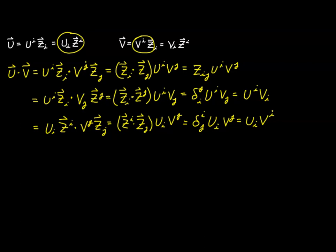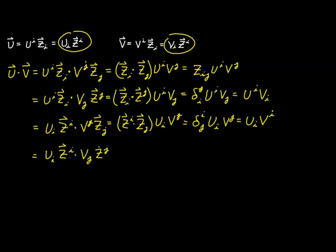We have one more possibility: using the contravariant basis for both vectors. That's u_i z^i dotted with v_j z^j. Combining the basis vectors gives z^i dot z^j with remaining terms u_i and v_j. This time, dotting two contravariant basis vectors gives us the contravariant metric tensor z^ij, so the expression is z^ij u_i v_j.